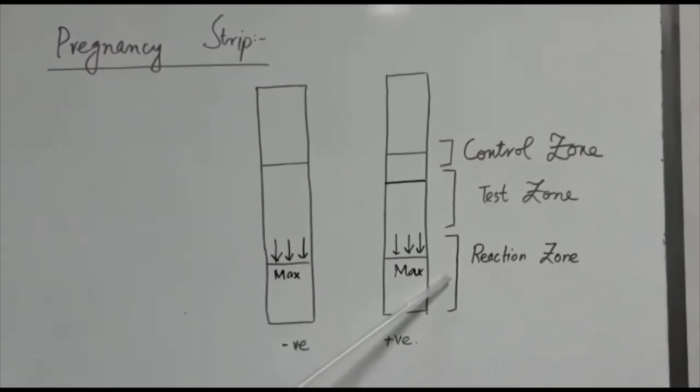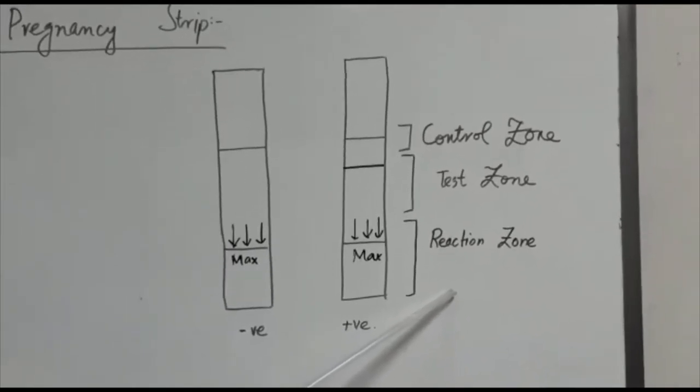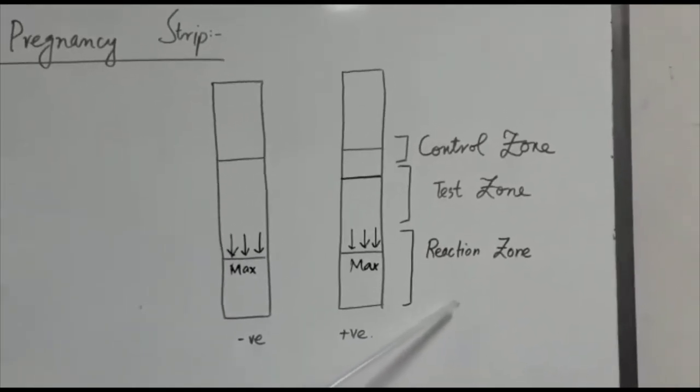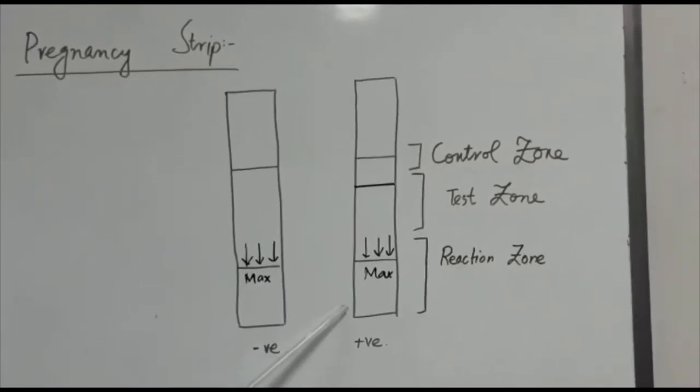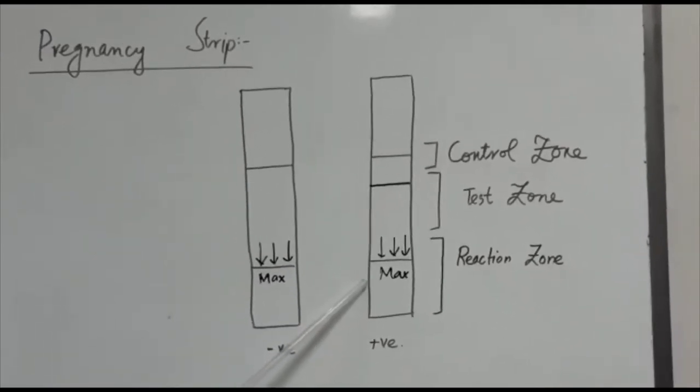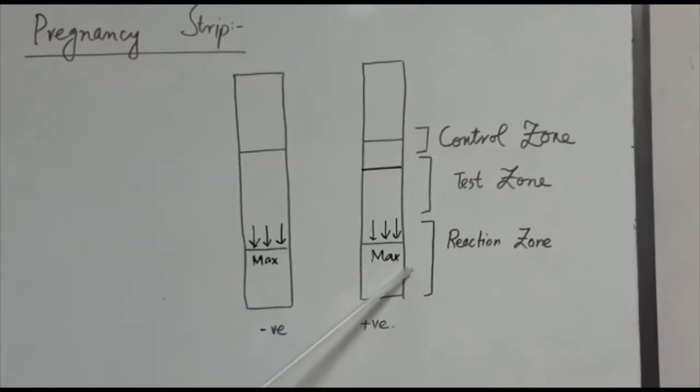First, the reaction zone. This zone contains antibodies for HCG alpha chain. When the urine test strip is dipped in the urine sample, the enzymes bind to this antibody.